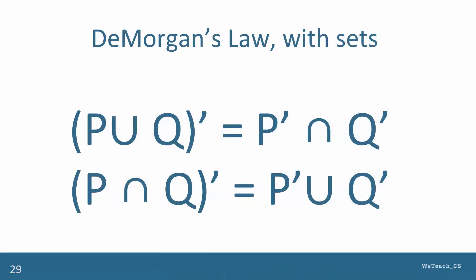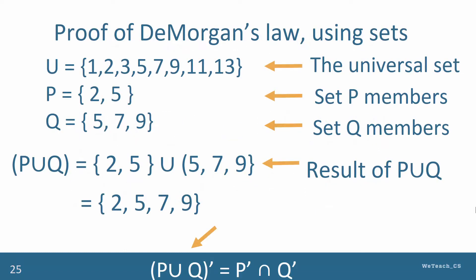De Morgan's Law also works with sets, specifically with the union complement and intersection complement sets. The next four slides show proof of the union complement version operation using sets. Study these carefully, pausing the video when necessary.